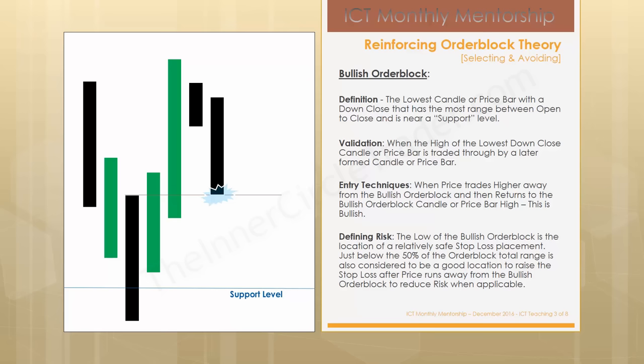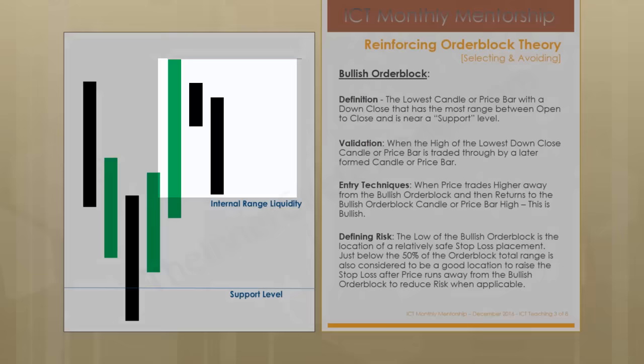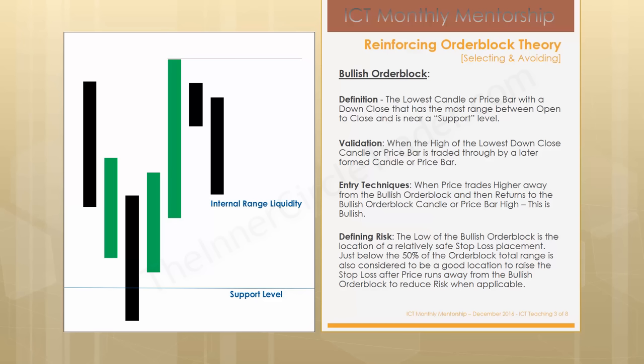What we're actually looking at is internal range liquidity. When we're trading inside the range, what we're looking for is an expansion up into a known level — what's up there? That's going to come in the form of external range liquidity. The external range liquidity is where we're going to be looking to offset some or all of our long position.